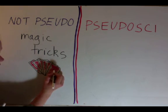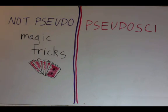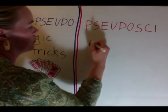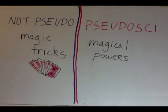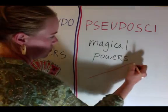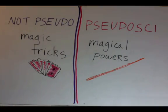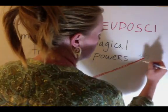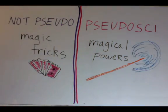But if someone claims that the magic trick was a result of magical powers, then it is a pseudoscience. Things such as telekinesis would be relying on magical powers.